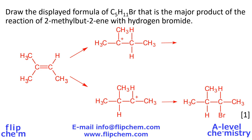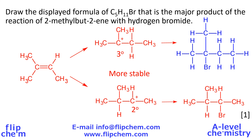The carbocation in the top pathway is tertiary — the C+ is attached to zero hydrogen atoms. The one in the bottom pathway is secondary — the C+ is attached to one hydrogen atom. The tertiary is the more stable, so this route leads to the major product. Watch out for the detail in the question: it asks for the displayed formula, so the answer shows every single bond with no contractions such as CH3. That is the displayed formula of the major product.